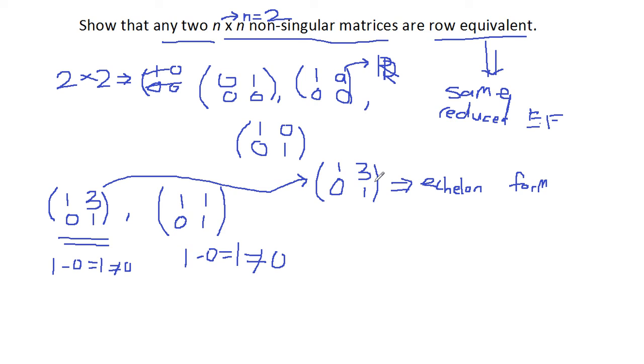We add minus three times row two to row one. Hence (1,0; 0,1). Minus three times one equals minus three, minus three plus three equals zero. The same for this: minus three times zero equals zero, zero plus one equals one. This is our reduced echelon form.